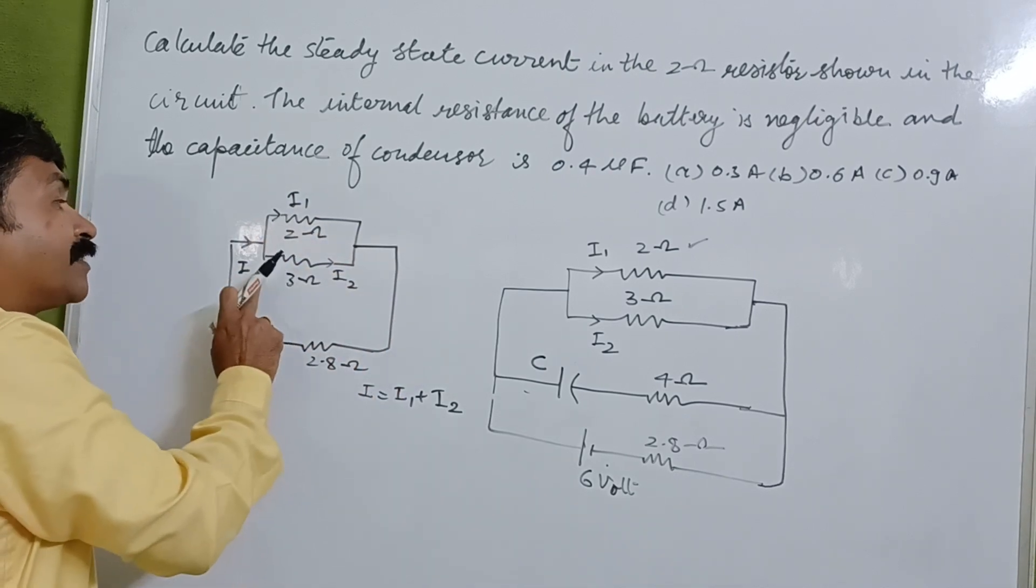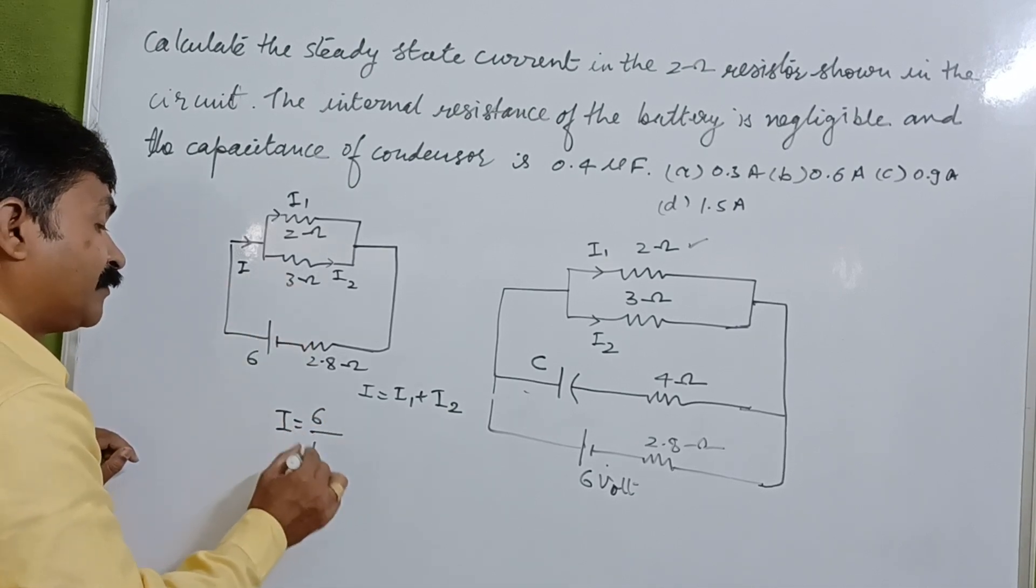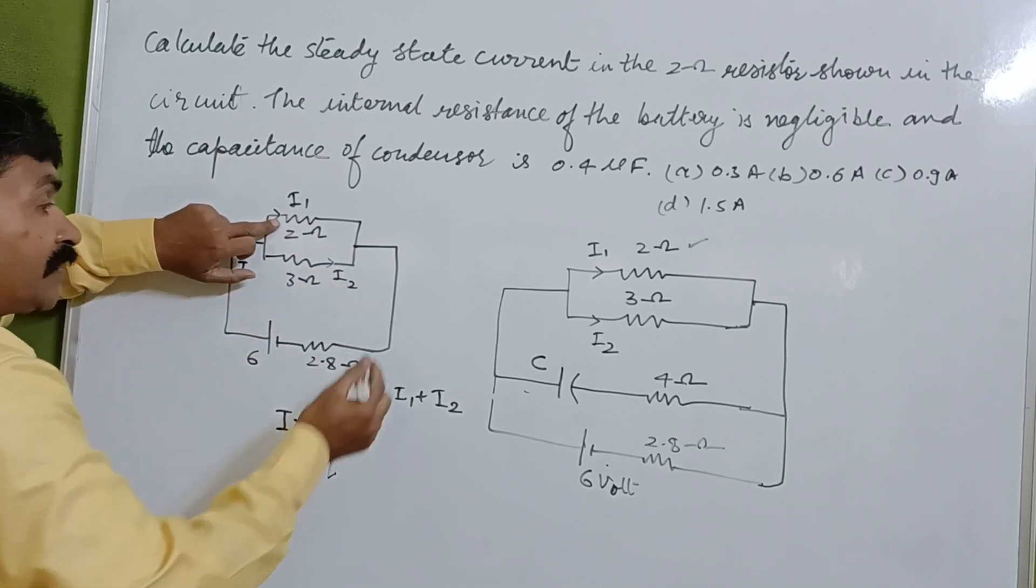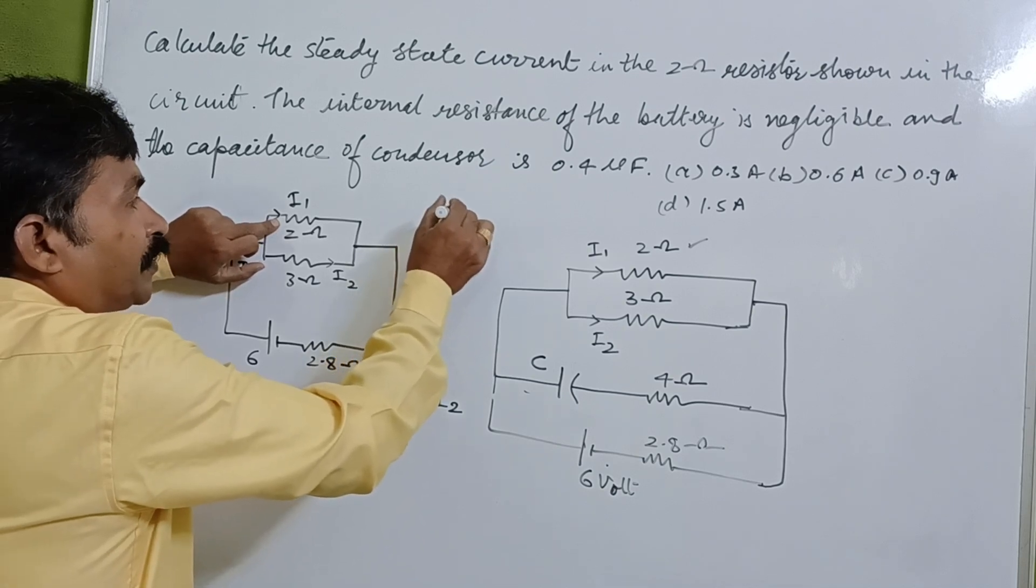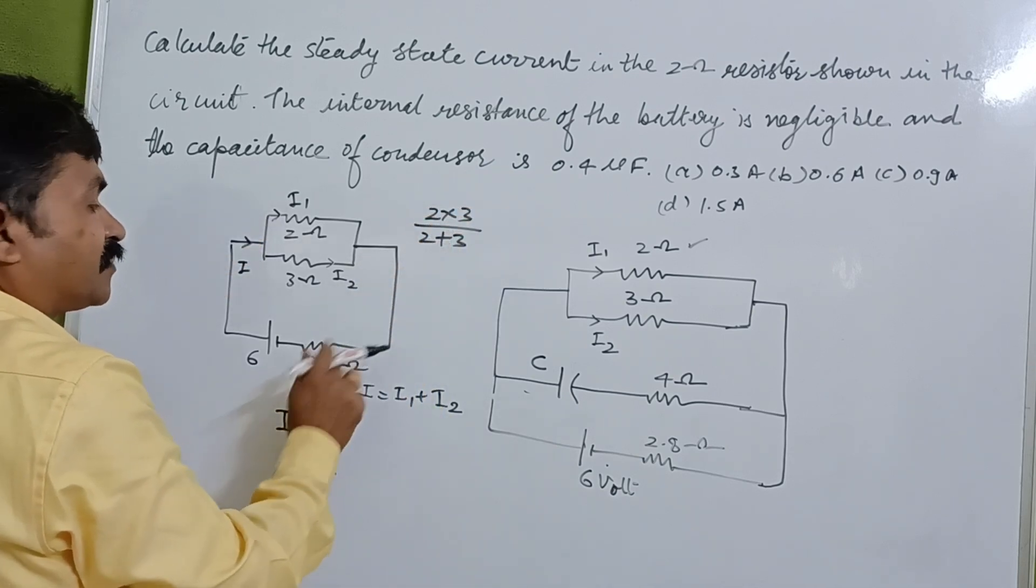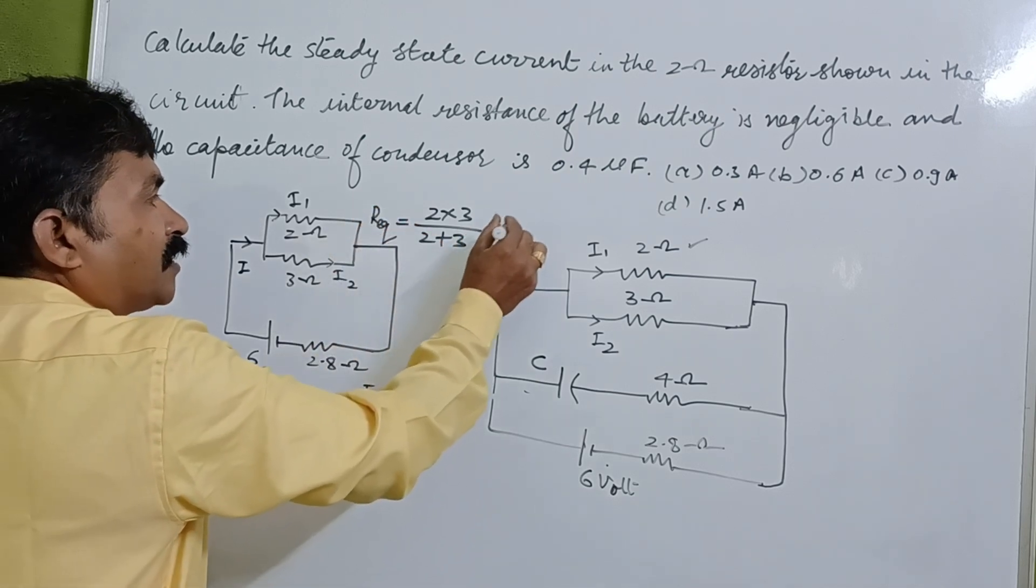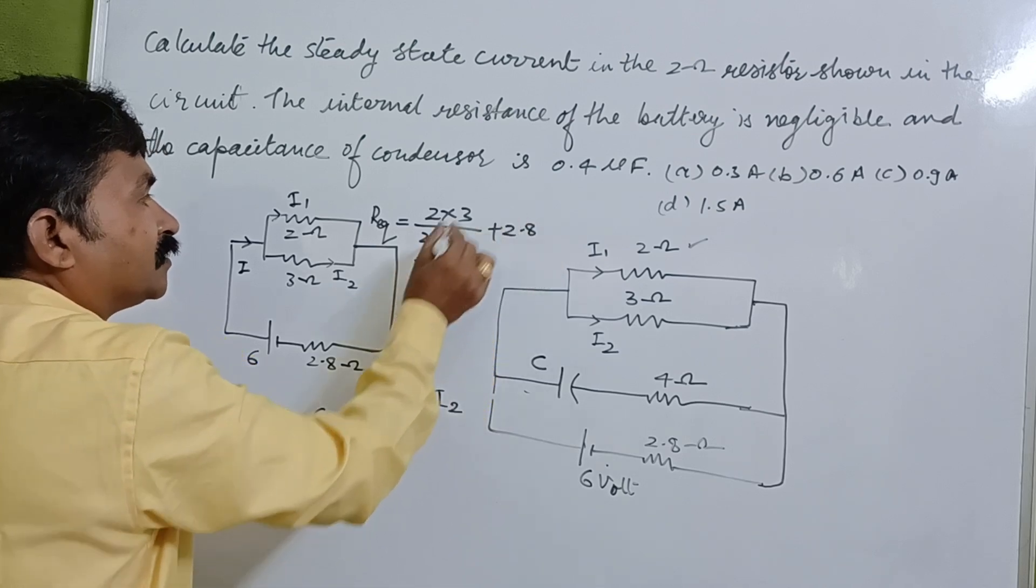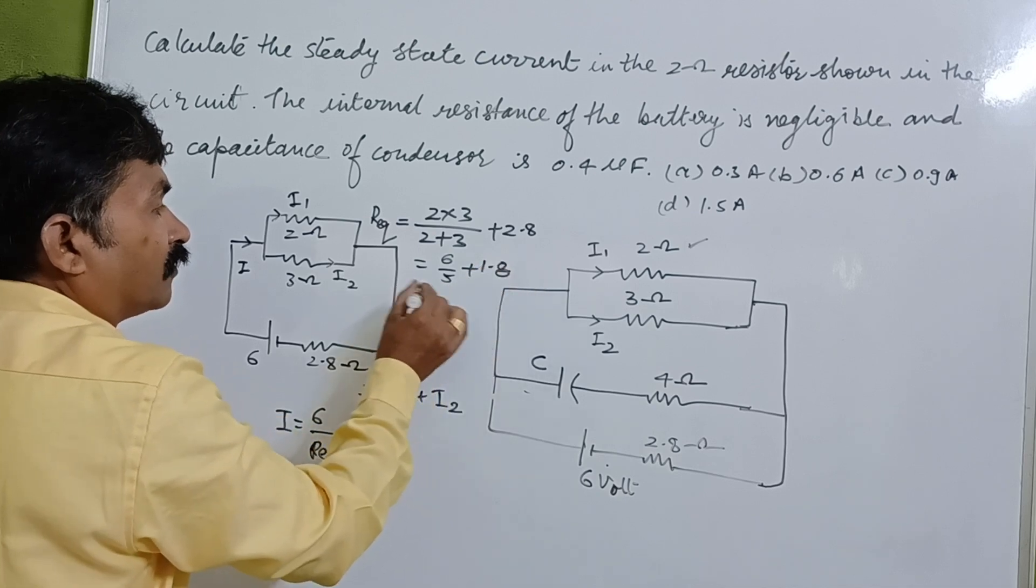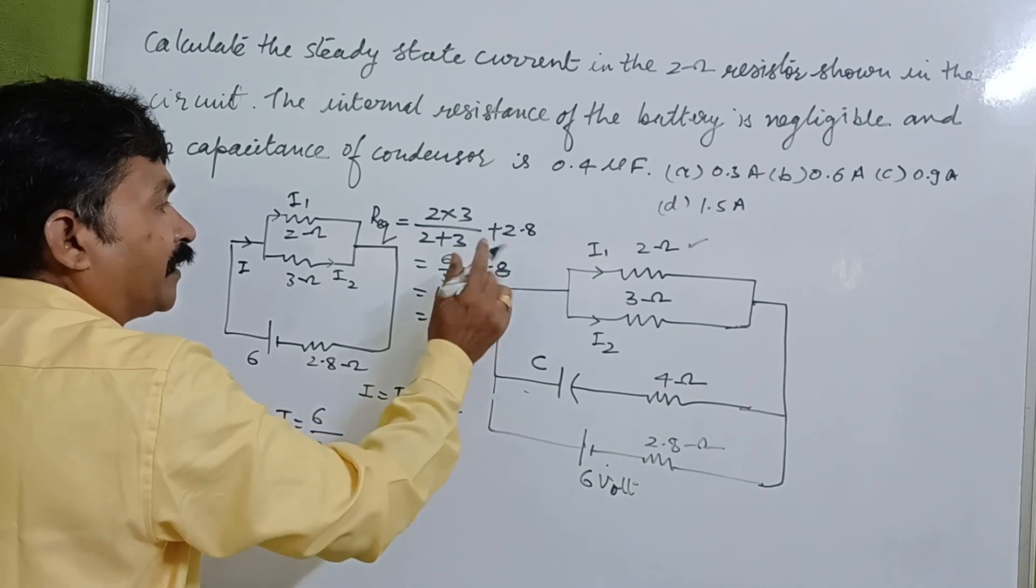I is equal to 6V divided by R equivalent, and R equivalent means 2 ohm and 3 ohm both are in parallel: 2 into 3 upon 2 plus 3. In series the total R equivalent is R equivalent plus 1.8. This is 6 upon 5 plus 1.8, and it is 1.2 plus 1.8 equals 3 ohm.